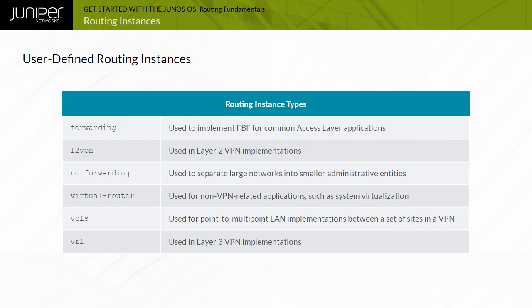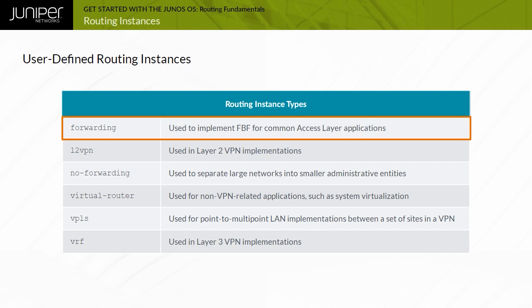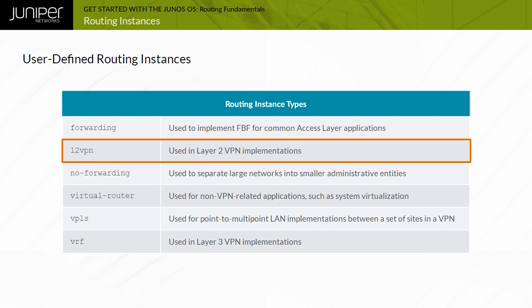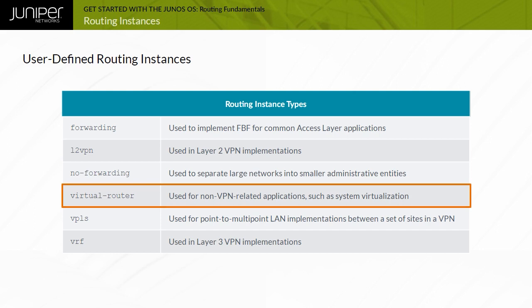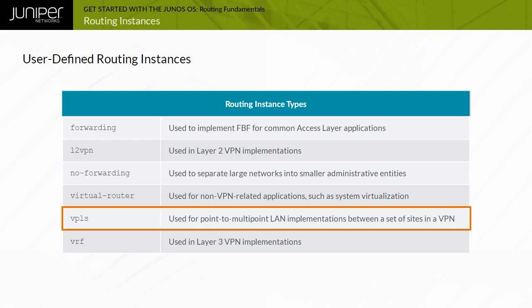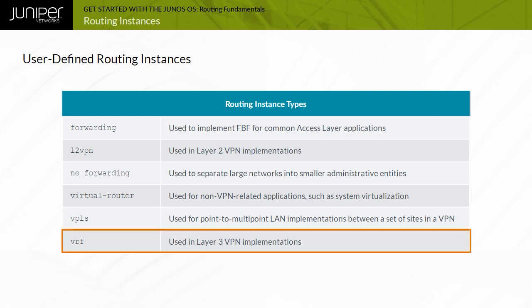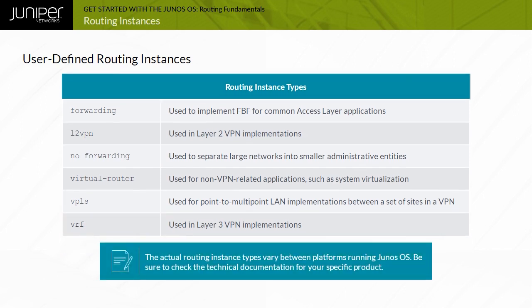This table displays some of the common routing instance types. Forwarding is used to implement FBF for common access layer applications. L2 VPN is used in layer 2 VPN implementations. No forwarding is used to separate large networks into smaller administrative entities. Virtual router is used for non-VPN related applications such as system virtualization. VPLS is used for point-to-multipoint LAN implementations between a set of sites in a VPN. VRF is used in layer 3 VPN implementations. Note that the actual routing instance types vary between platforms running Junos OS — be sure to check the technical documentation for your specific product.